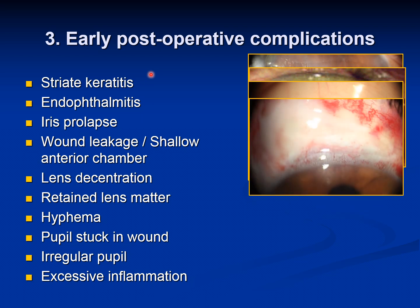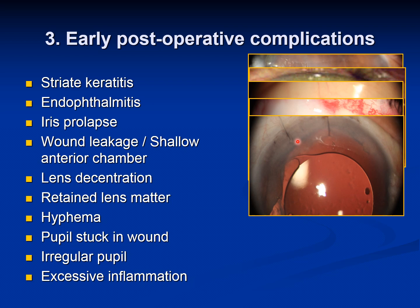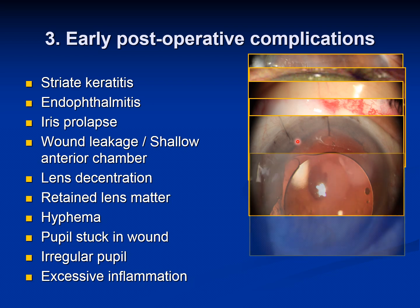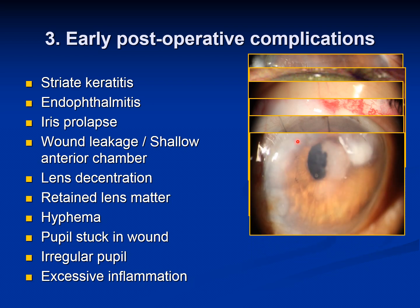Then is wound leakage — in this photograph you can see the aqueous leaking under the conjunctiva and ballooning it up, which needs to be dealt with accordingly. Lens decentration may or may not need further treatment. Retained lens matter, because the cortical lens matter hasn't been fully cleared, needs to be treated accordingly; sometimes you have to take the patient back to the operating theater to remove it.